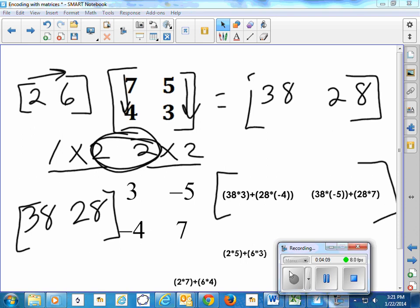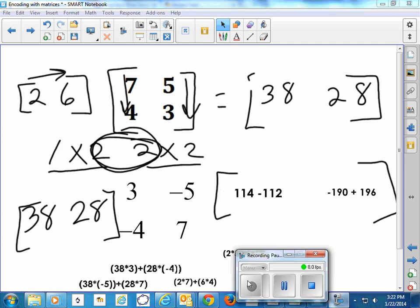So then we go ahead and evaluate those multiplications and additions. That will be 114 minus 112, and negative 190 plus 196.